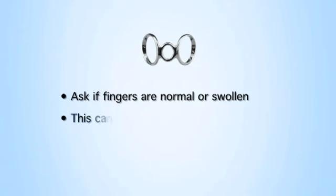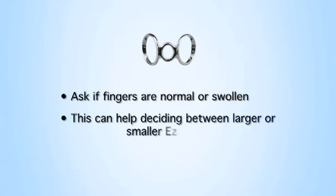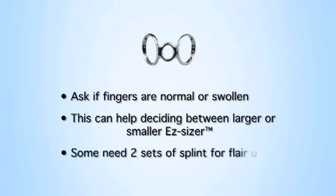Understanding if they have fluctuations in size can help when deciding between the larger or smaller easy-sizer. Some people even have two sets of splints for when they have flare-ups and swelling.